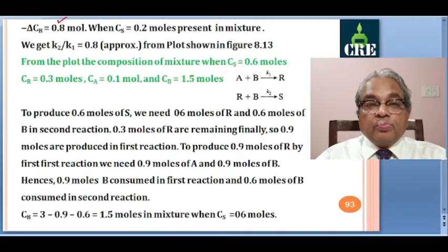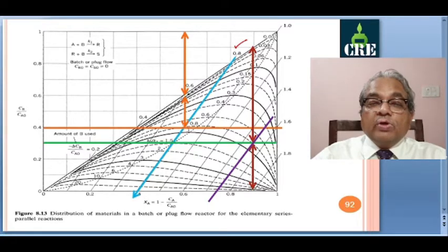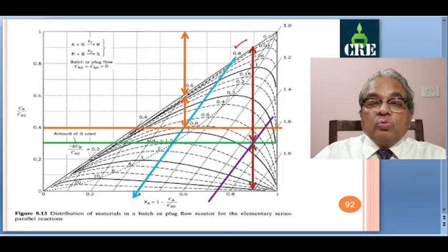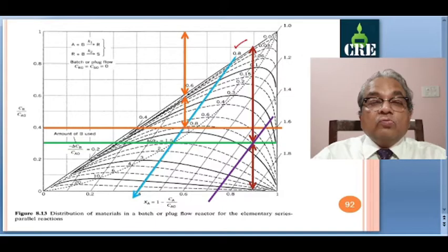From the design plot, delta CB by CA0 is 0.8. We follow the line of slope 2 and move along this to locate the point on the blue line where delta CB by CA0 equals 0.8. Moving along this line and locating the point such that the distance from the diagonal representing CA0 gives CS equal to 0.2.